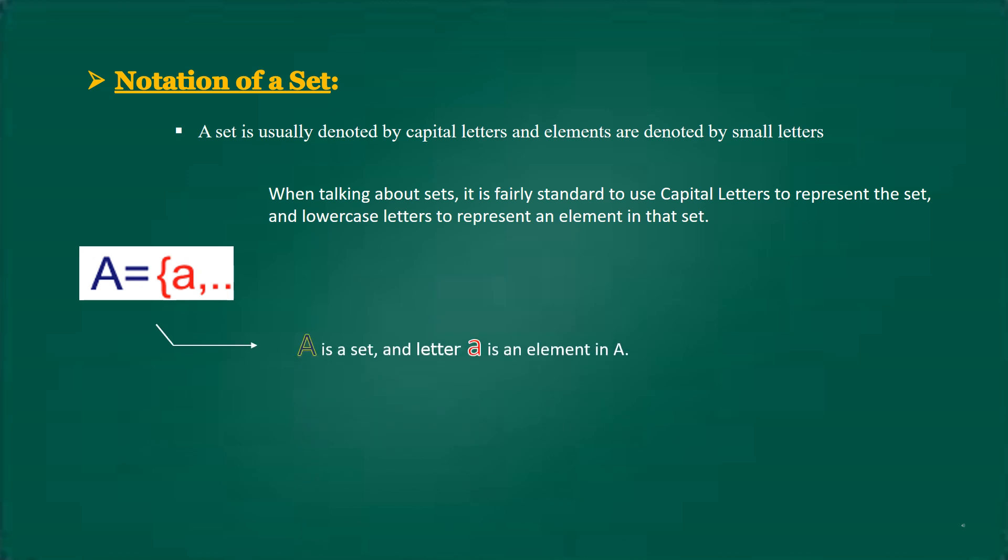Here capital A is a set and the letter small a is an element in set A. For example, the collection of vowels in English alphabets: a, e, i, o, u.